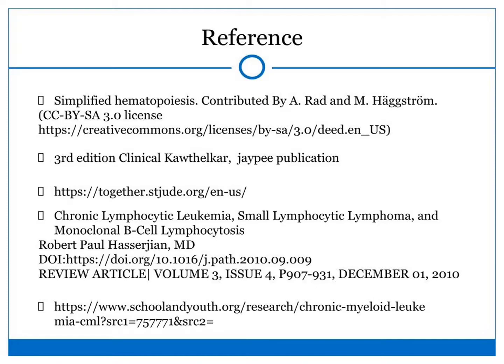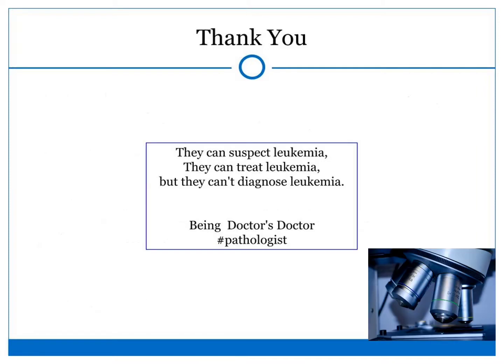These are my references for the images. As of now, for confirmation of the subtype of leukemia, many advanced studies like flow cytometry and immunofluorescence are available, but we still cannot miss this approach for the prognosis as well as the provisional diagnosis of the type of leukemia. Thank you.